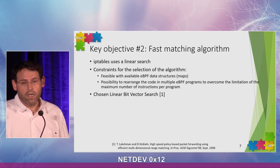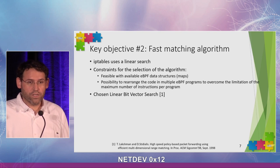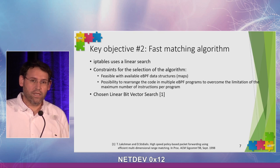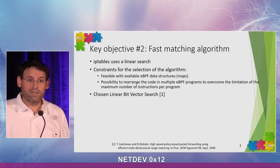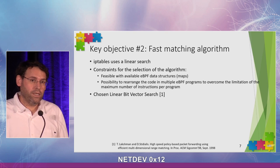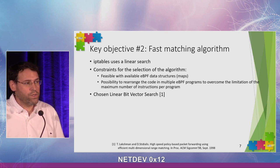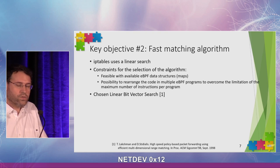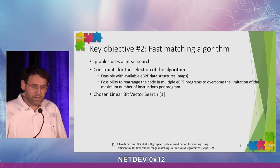One of the key constraints of our project was: do not touch the Linux kernel. Let's try to implement everything with the vanilla kernel. Implementing a new map type in eBPF wasn't an option. So we chose a very old matching algorithm — the linear bit vector search — presented about 20 years ago. It divides the matching into a set of steps, each working on a given field of the rules.